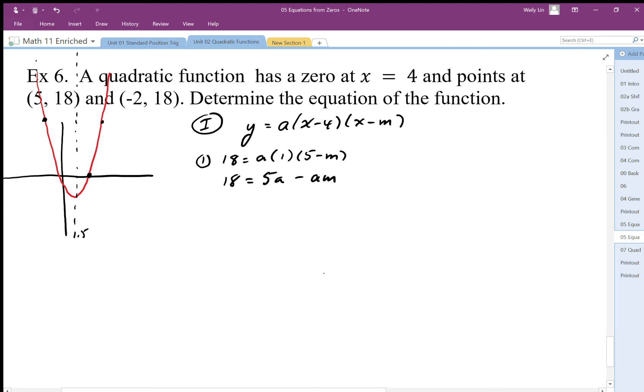I have two variables - they're kind of bonded together with that times, so that might be a problem. But when we put the other coordinate in, when x is -2, we get a(-2 - 4) is -6, then -2 - m. I'm going to simplify this one.